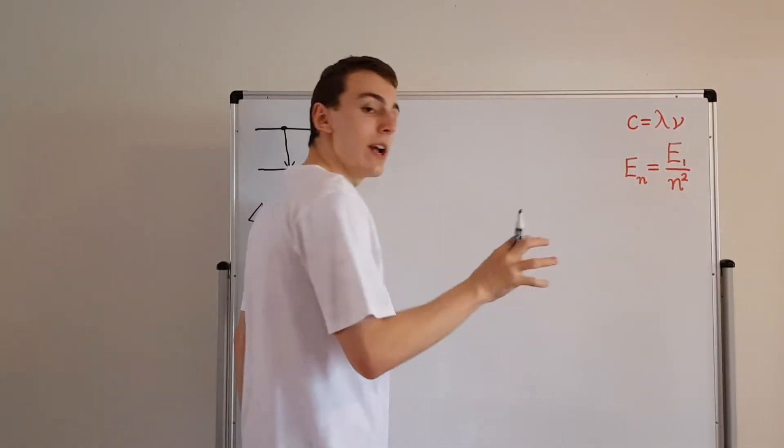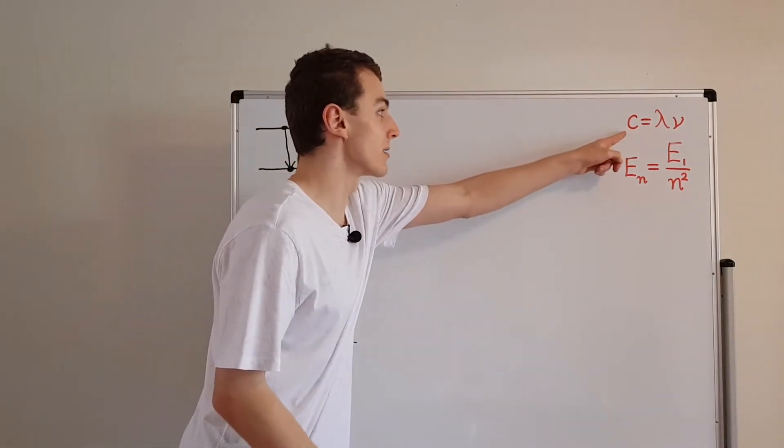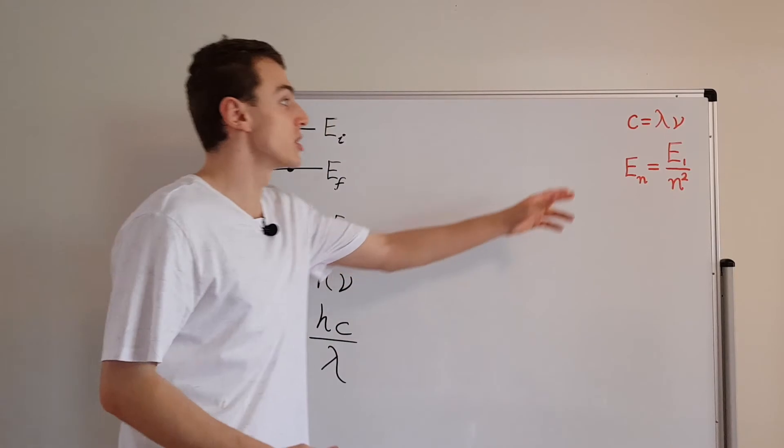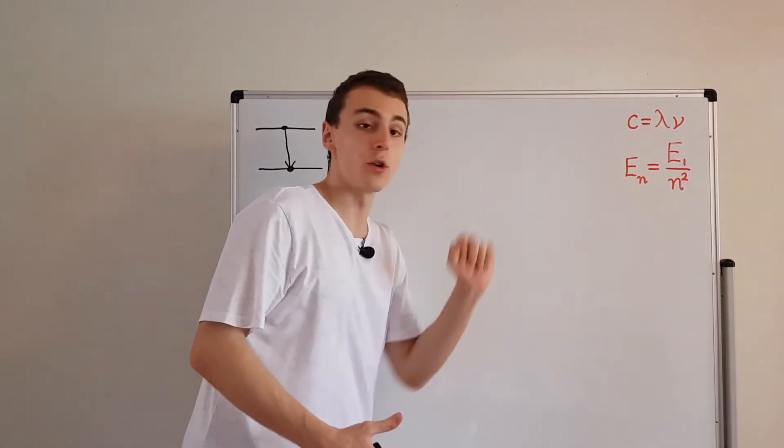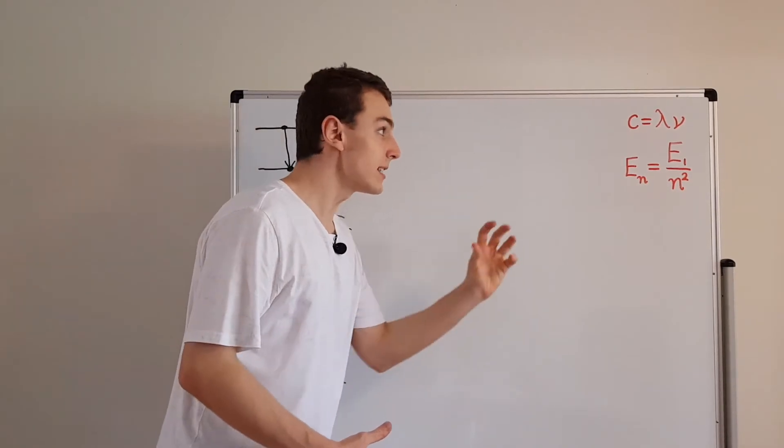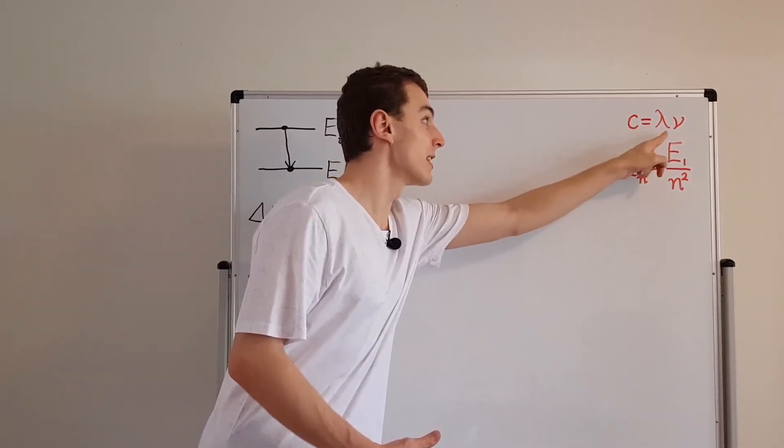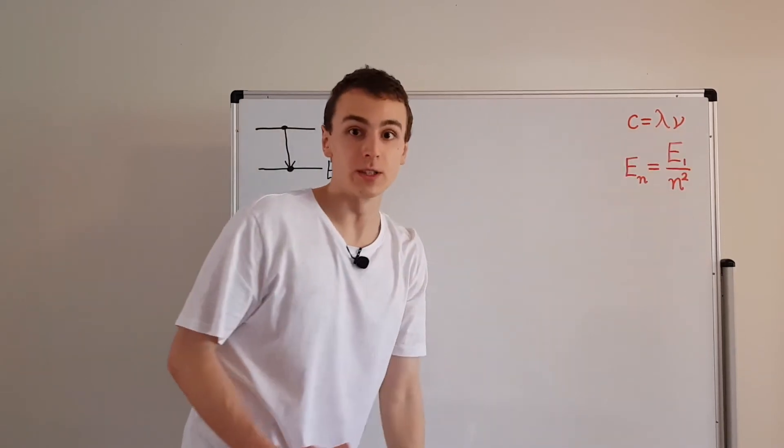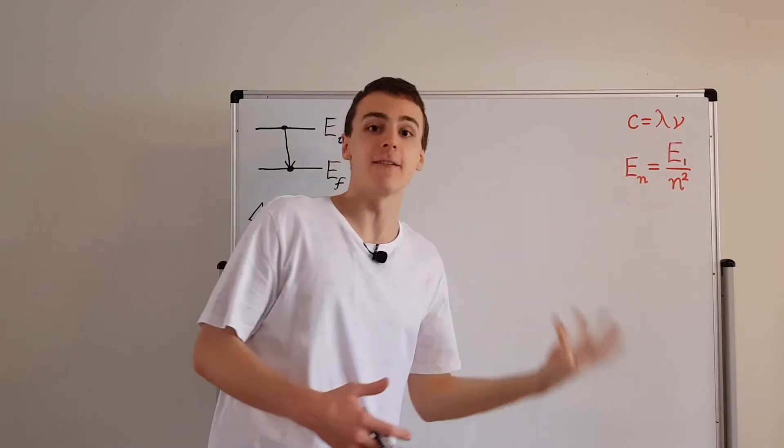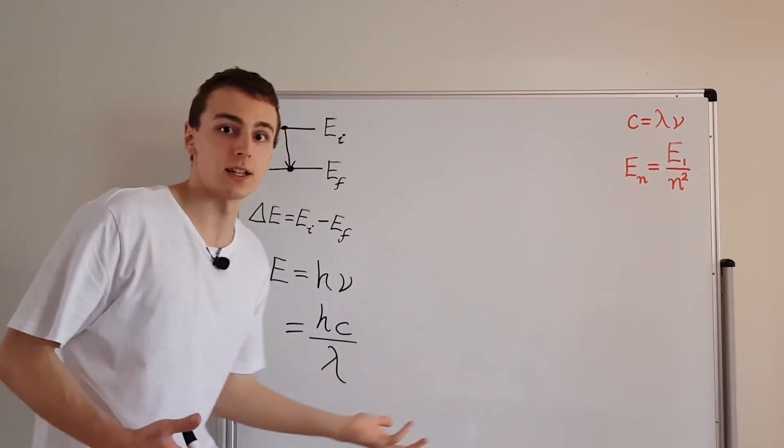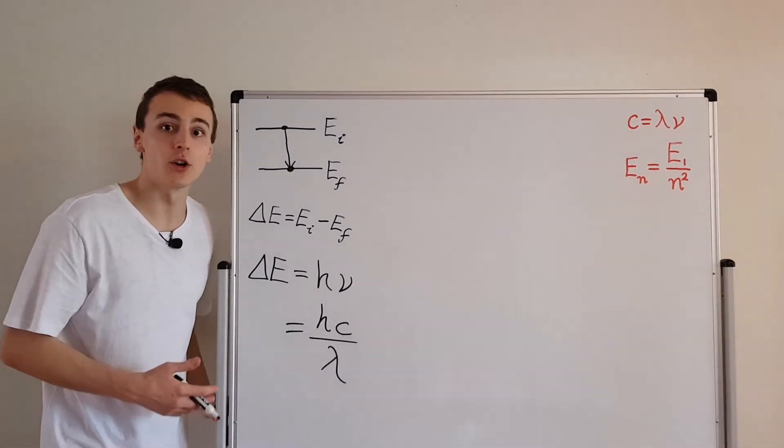The product of the wavelength and the frequency is always going to give the speed of light. This is for a photon. This actually works in general for different types of waves too. So different types of waves also obey this relationship. But for light, c is the speed of light. Lambda, that's the wavelength of light. And mu, that is the frequency of light. You might also see in some other resources that mu is written as f. F is also frequency. So frequency can be denoted by f, and it can also be denoted by mu.